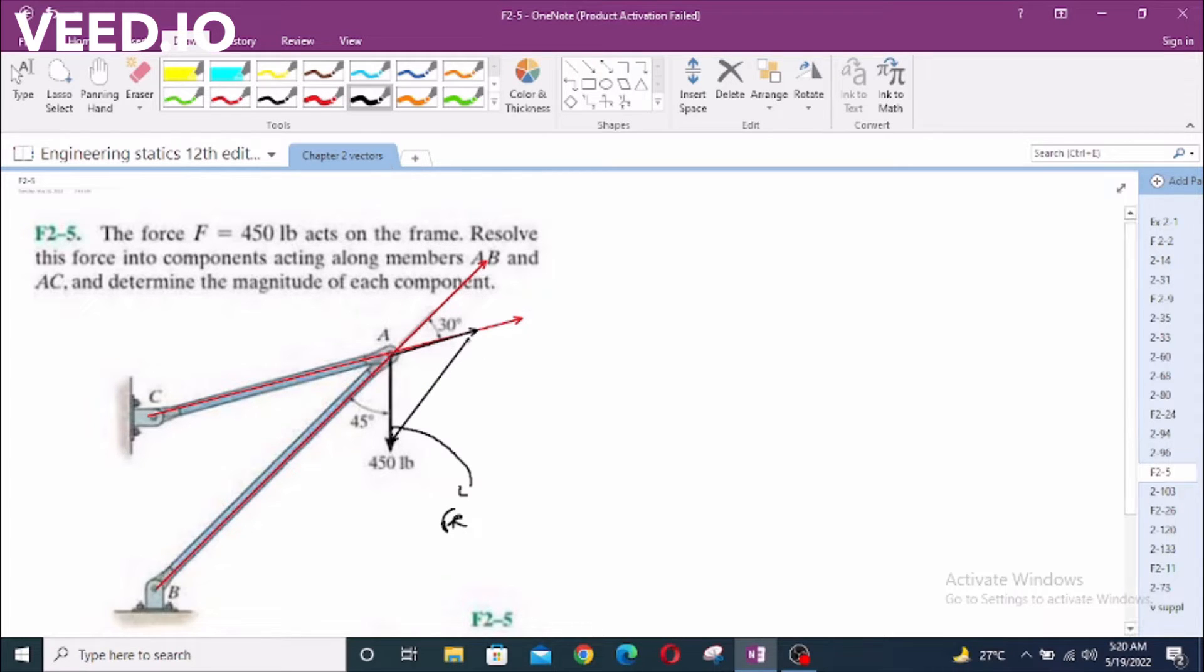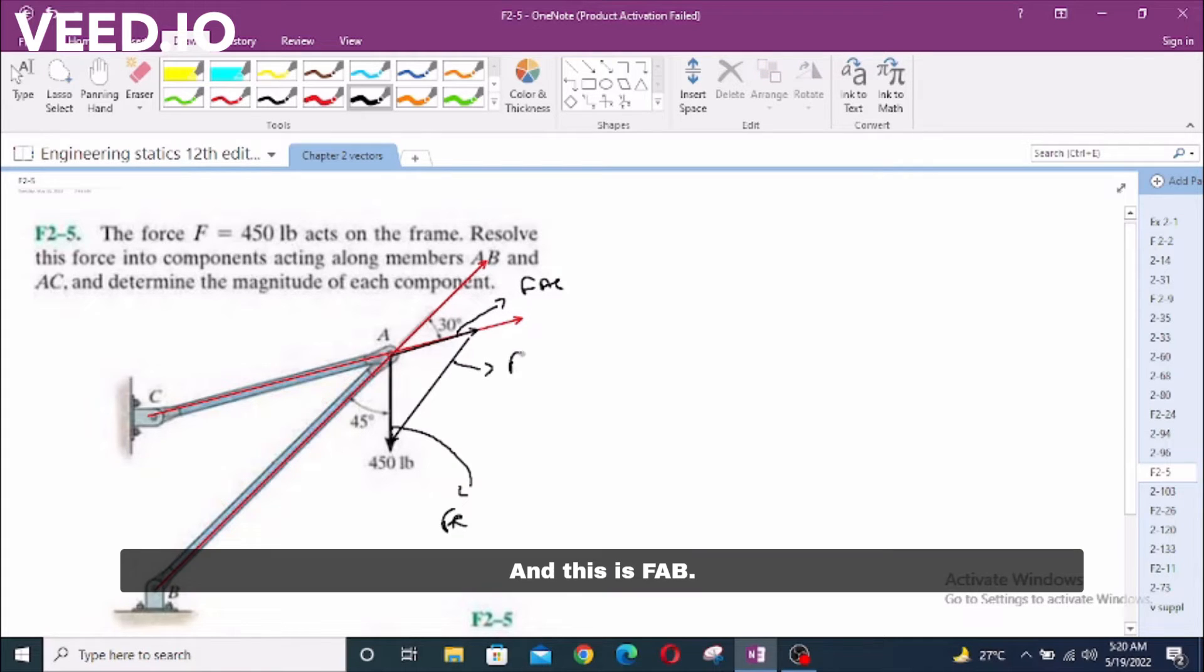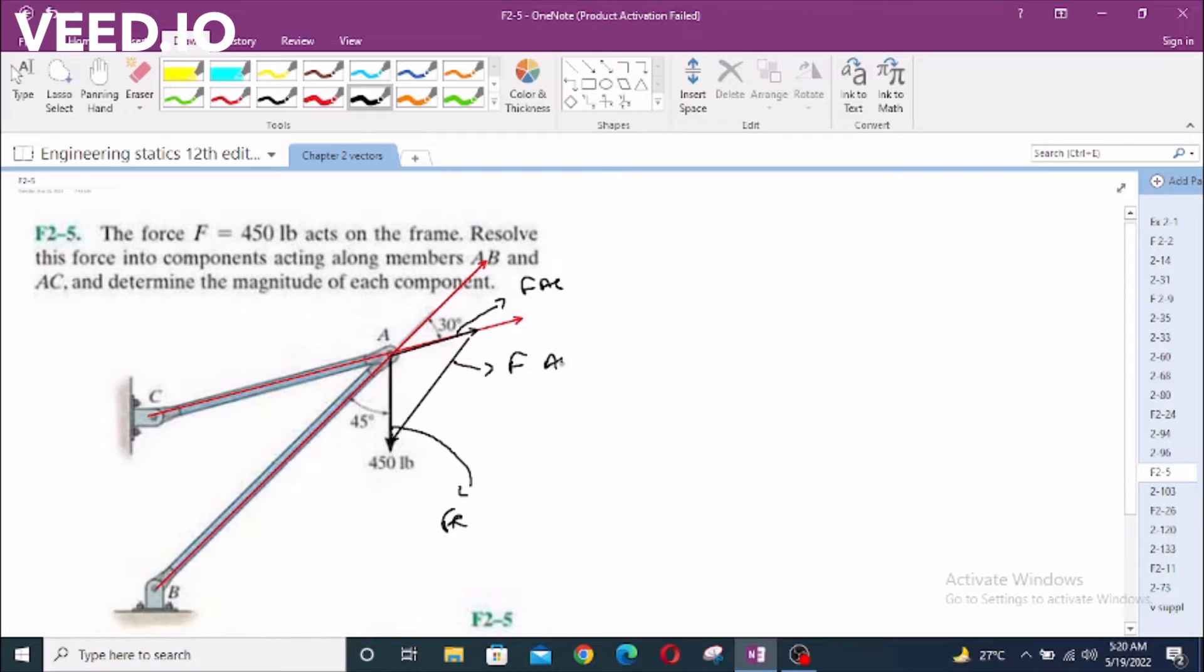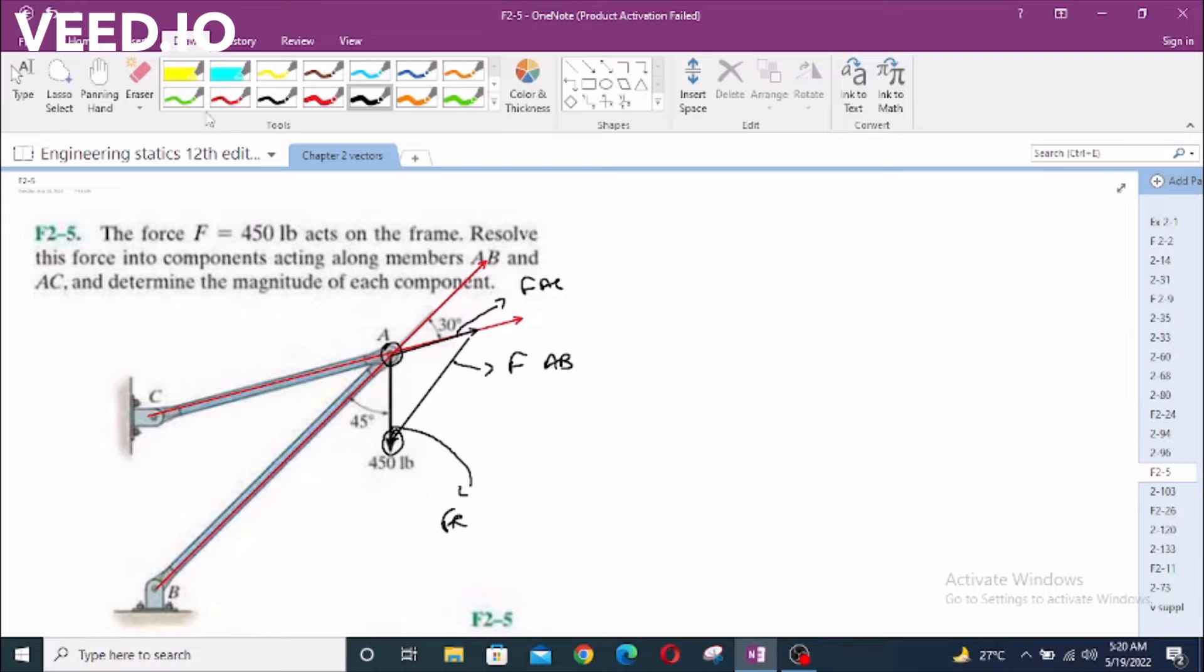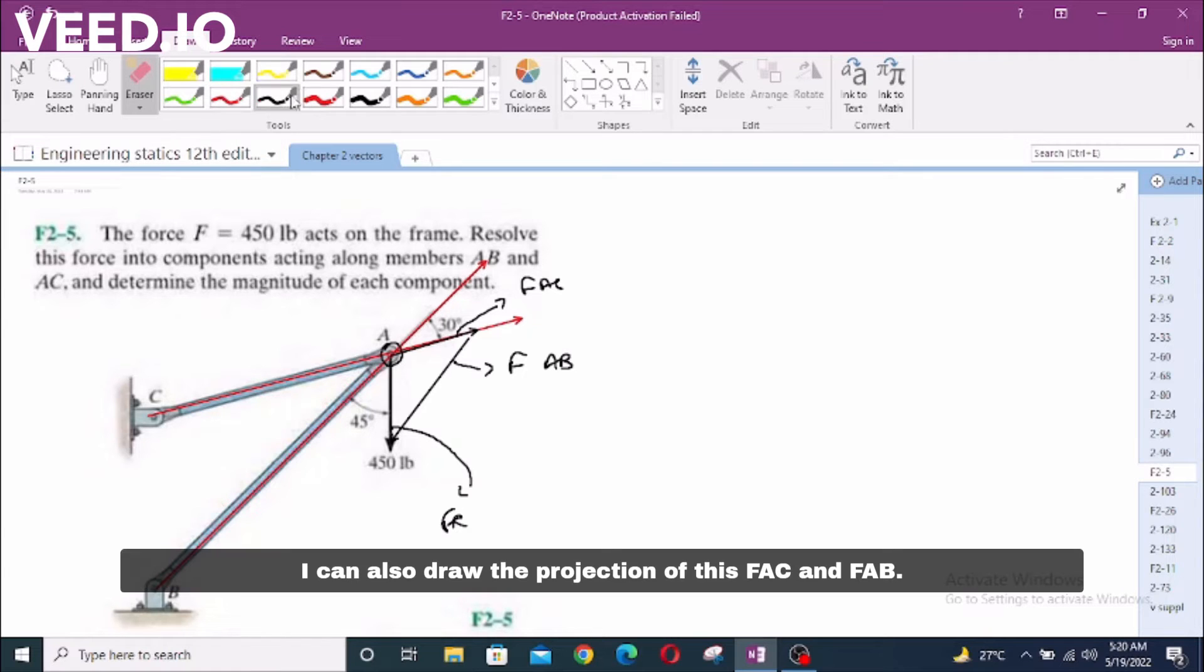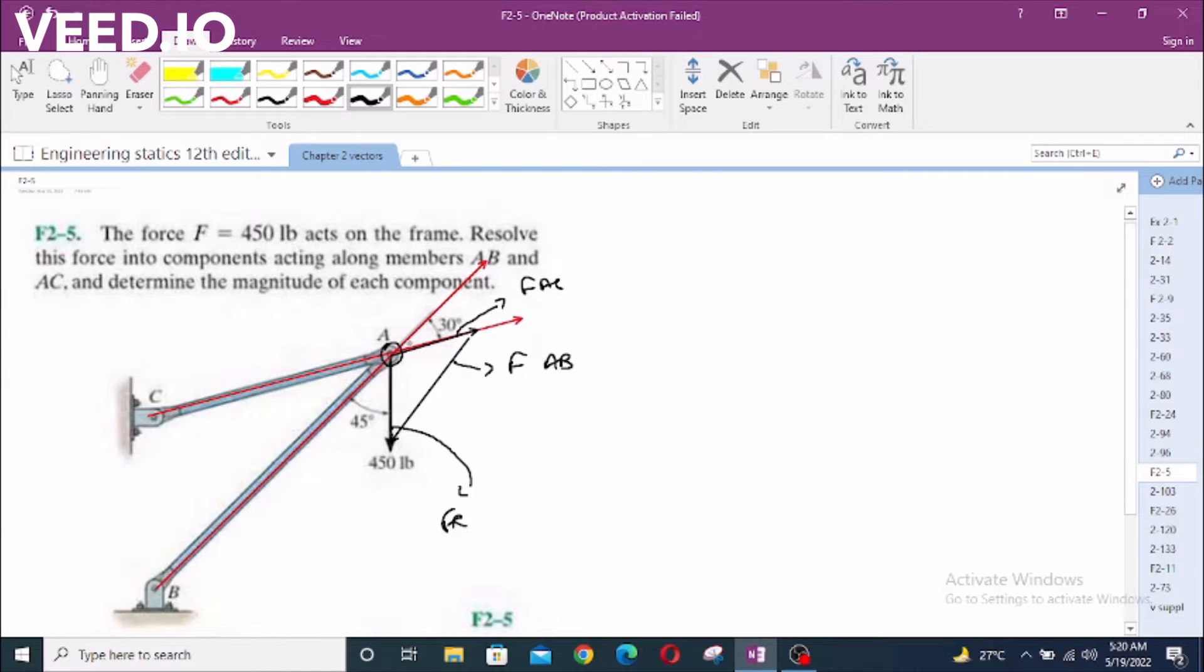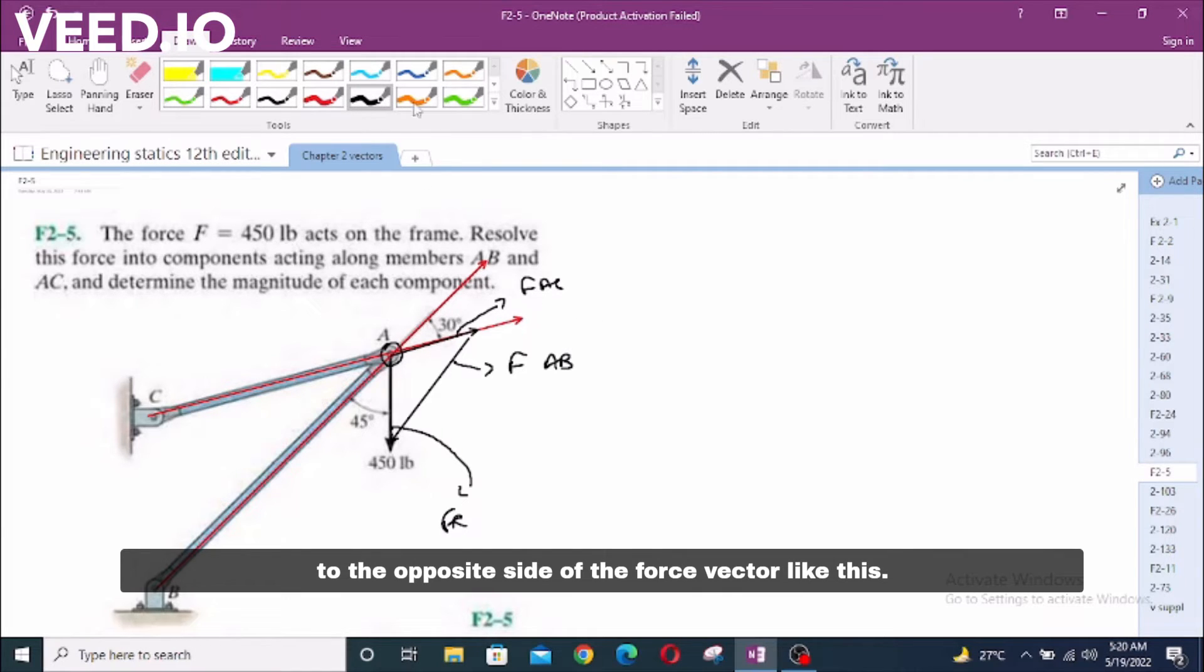Let's call this F_AC and this is F_AB. The resultant is drawn from the tail of first vector to the head of last vector. I can also draw the projection of this F_AC and F_AB to the opposite side of the force vector, here like this.